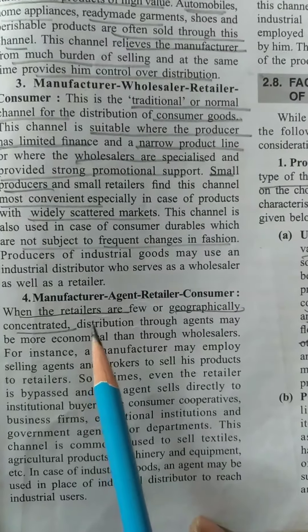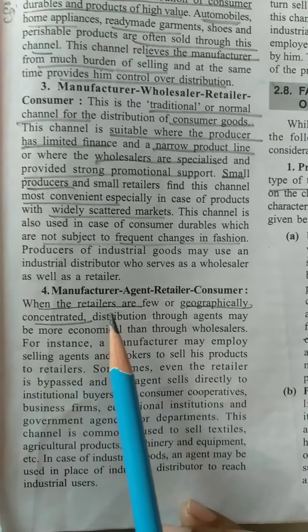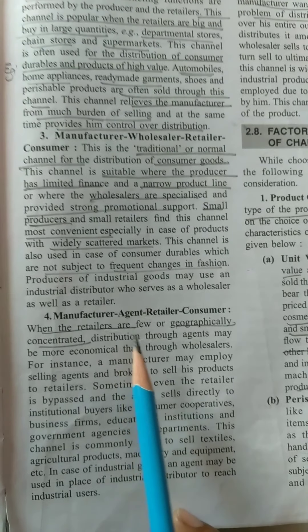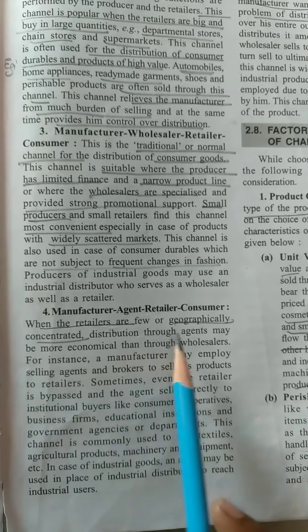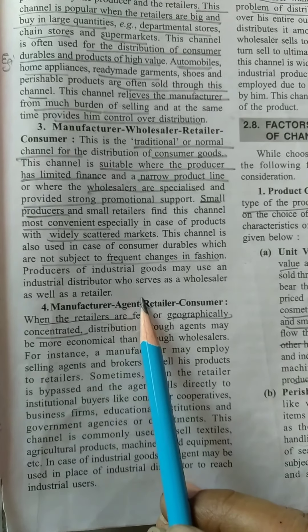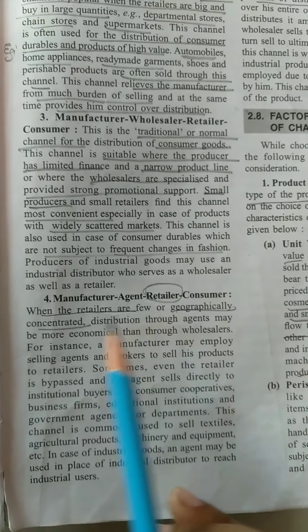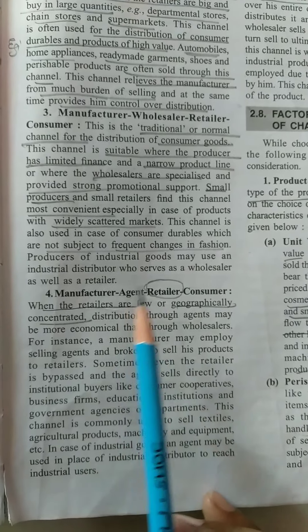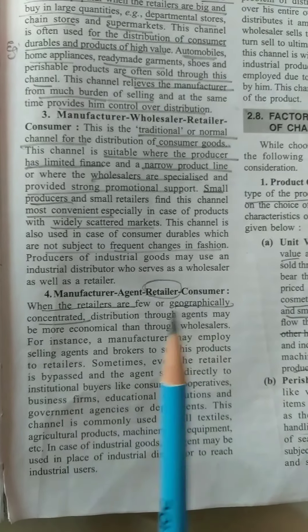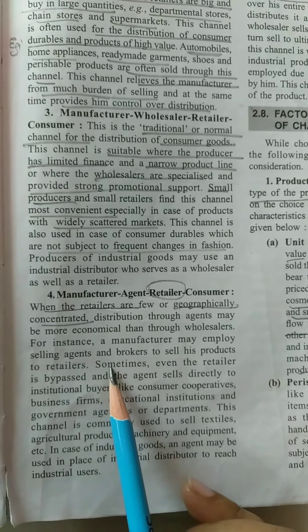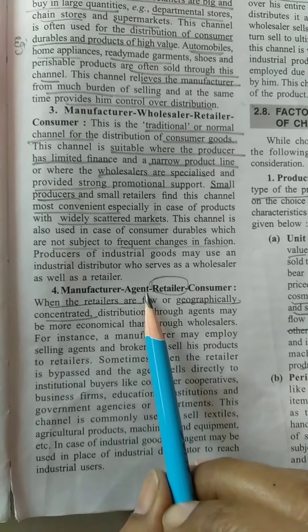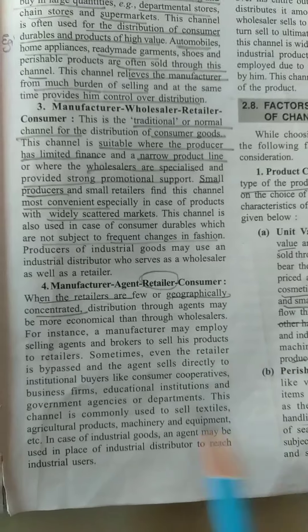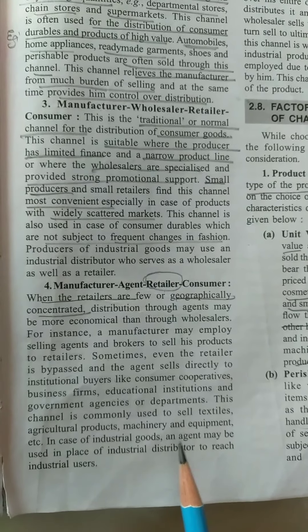The fourth channel — manufacturer to agent to retailer to consumer — is used when retailers are few and geographically concentrated. The manufacturer hires an agent who searches for retailers, who then sell goods to final consumers. Sometimes the retailer is bypassed and the agent sells directly to consumers. This channel is commonly used for agricultural products, machinery, and equipment.